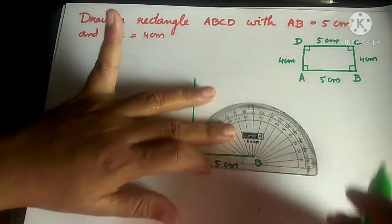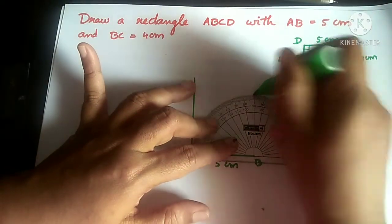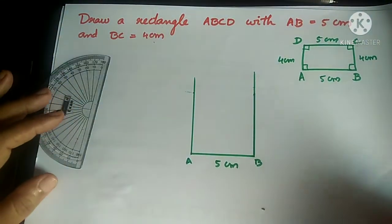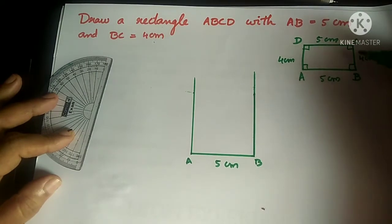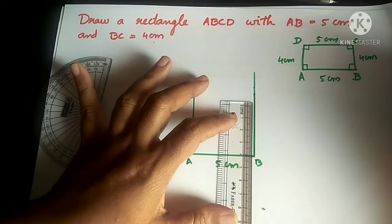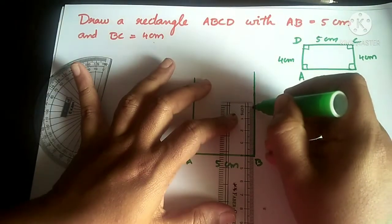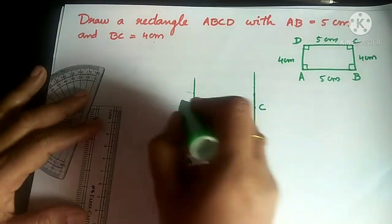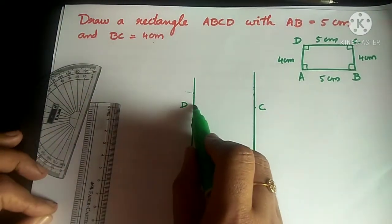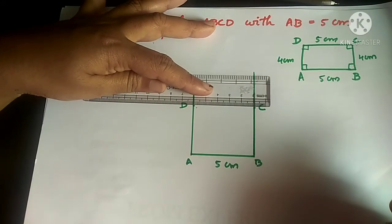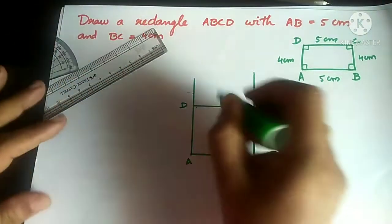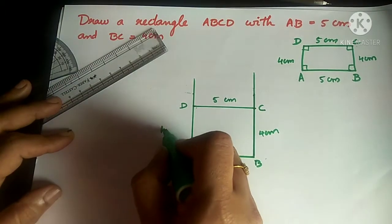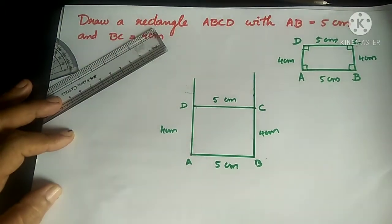Same way, we keep the protractor at point B, mark 90 degrees and join the point to B. But we need only 4 cm. From B to C it is only 4 cm, so by using the scale, mark 4 cm and mark it as C. Here also I mark 4 cm and mark it as D. Now we can join the points C and D and mark it as 5 cm.